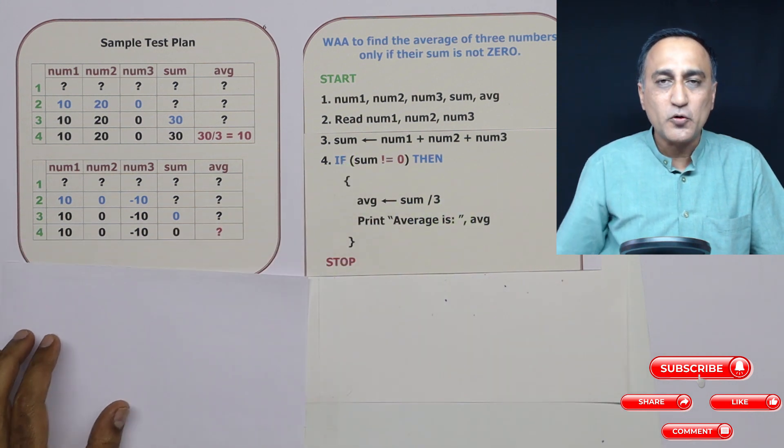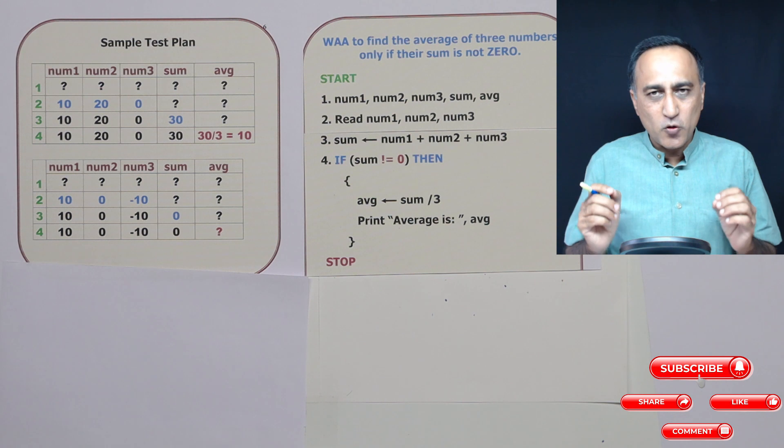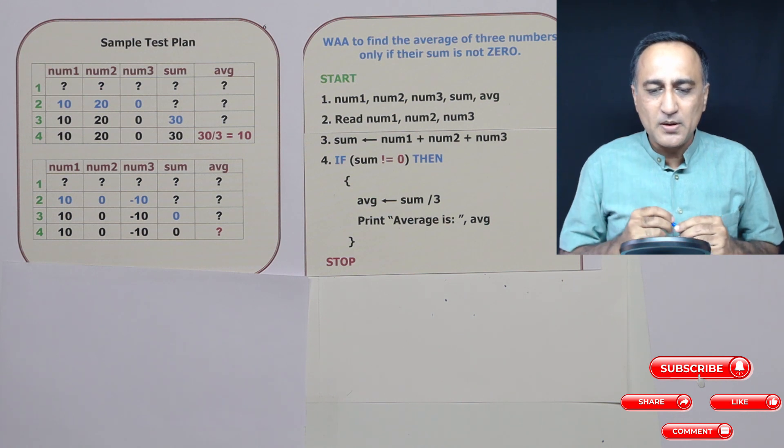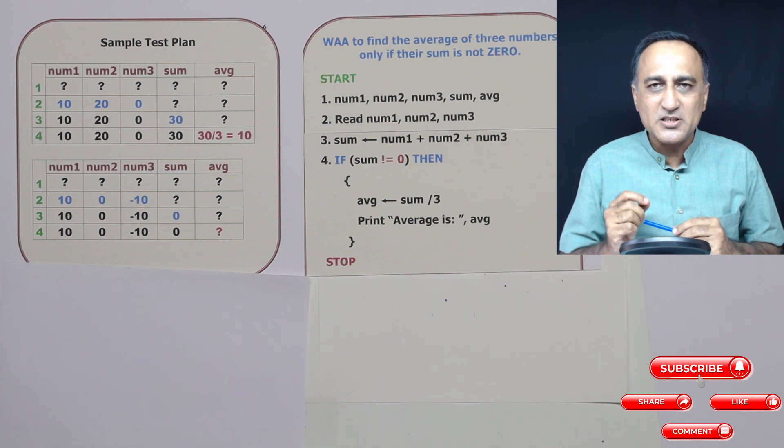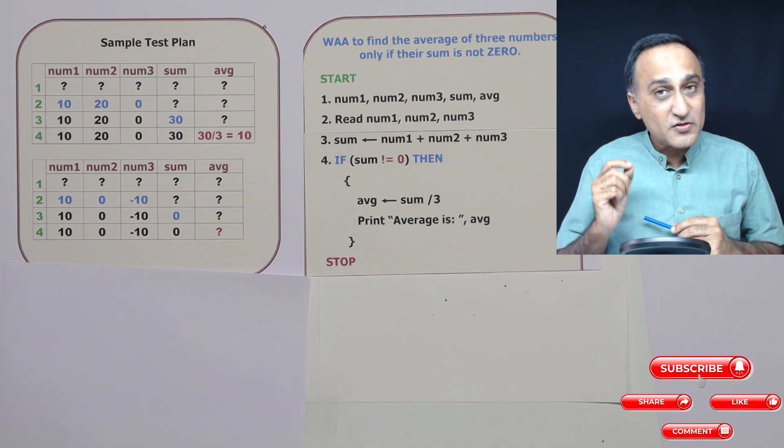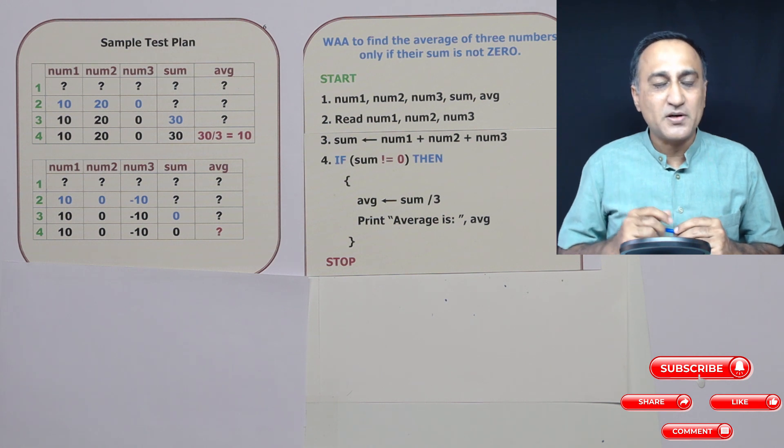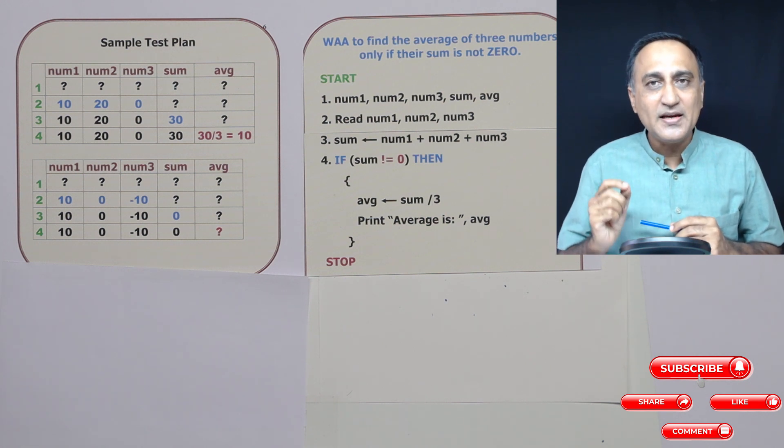The average is not going to be calculated. So I hope you understood this very simple problem to find the average of three numbers provided the sum is not zero. Even if sum is negative, it is okay, it will still find the average. But if sum is zero, it will not find the average.